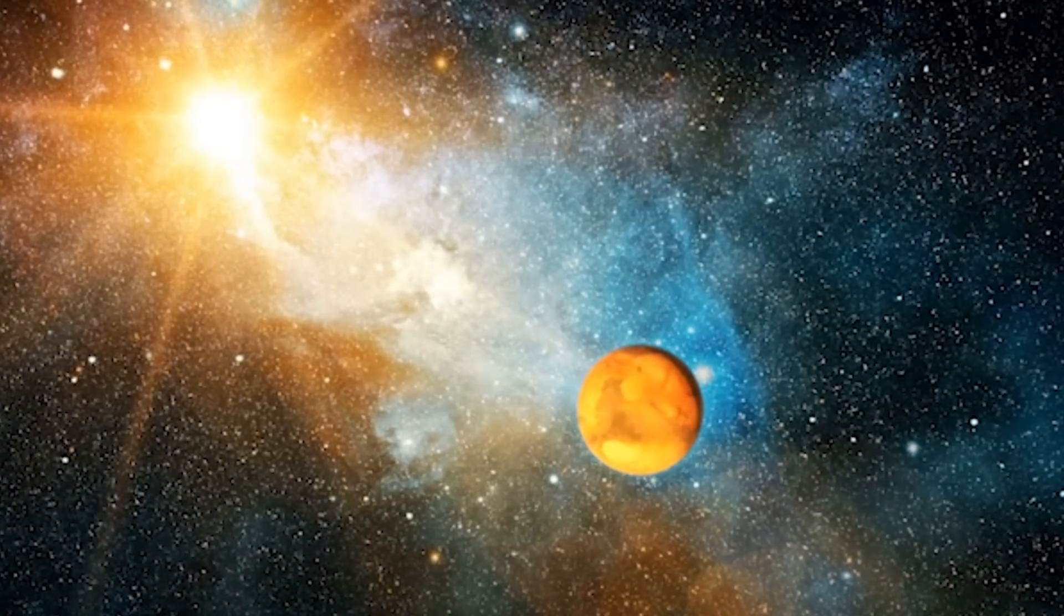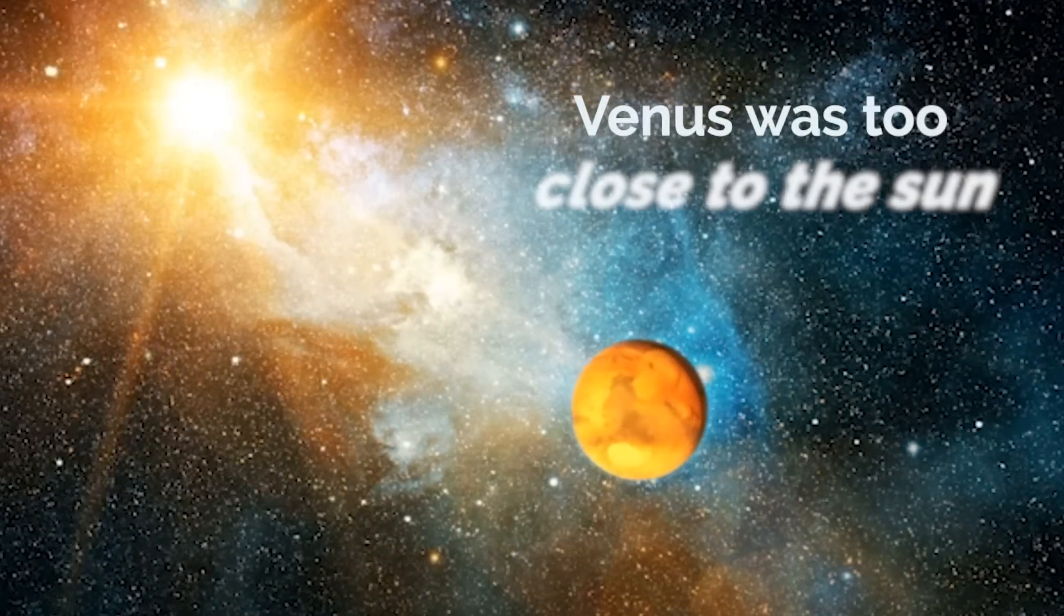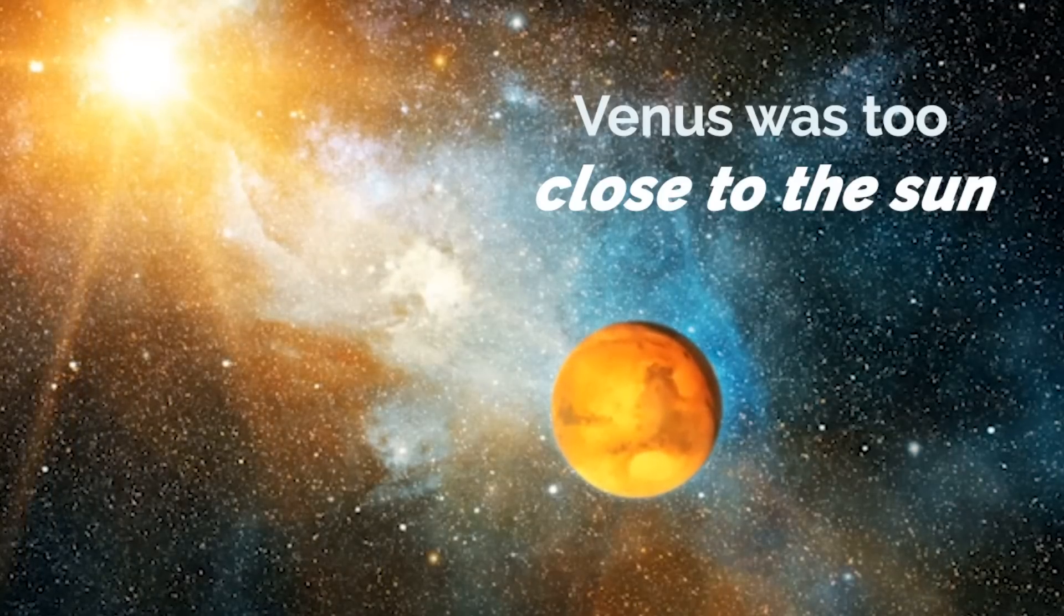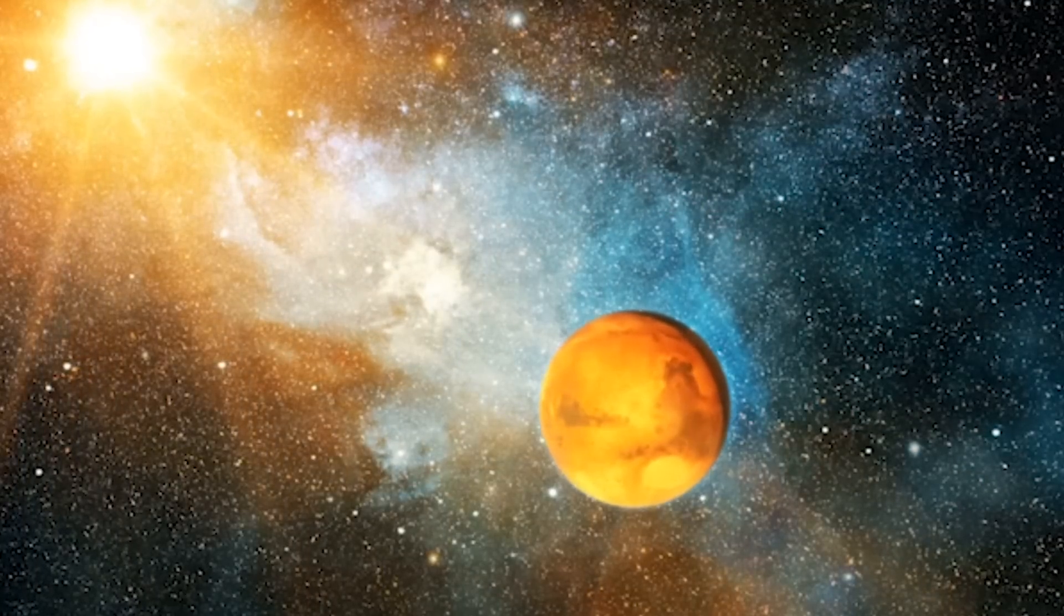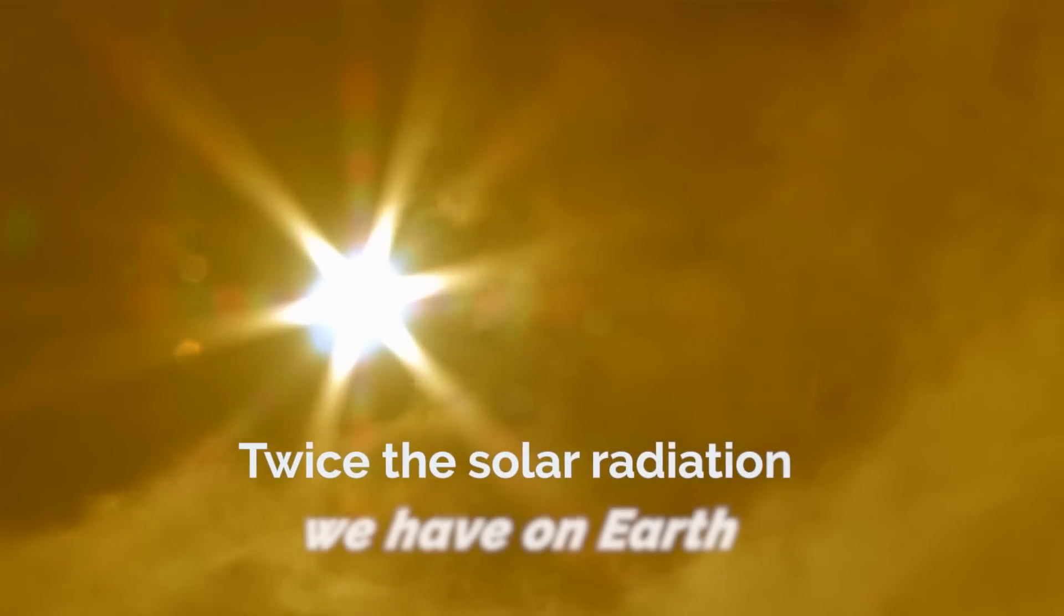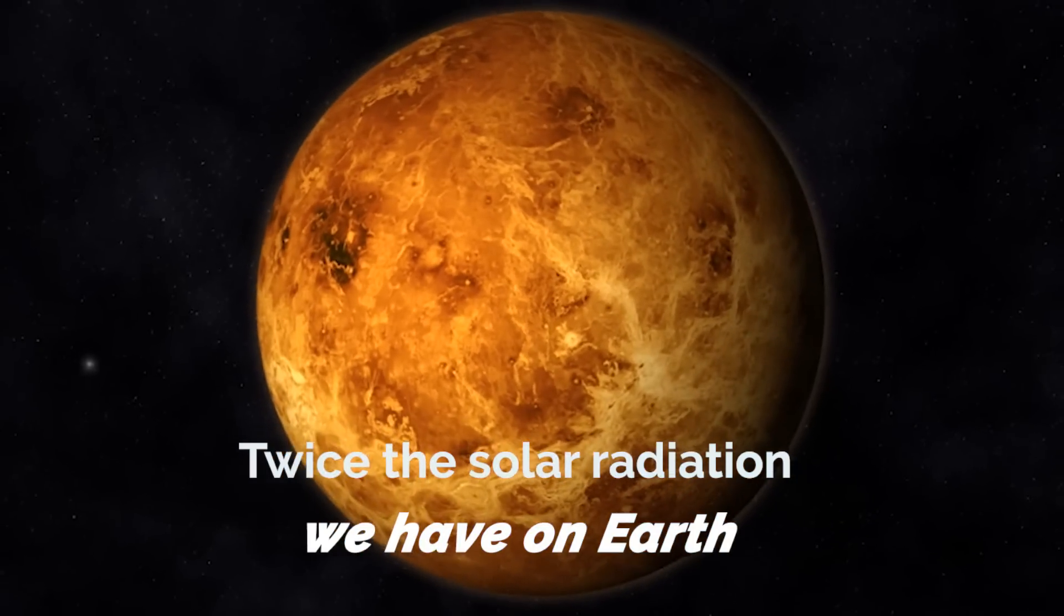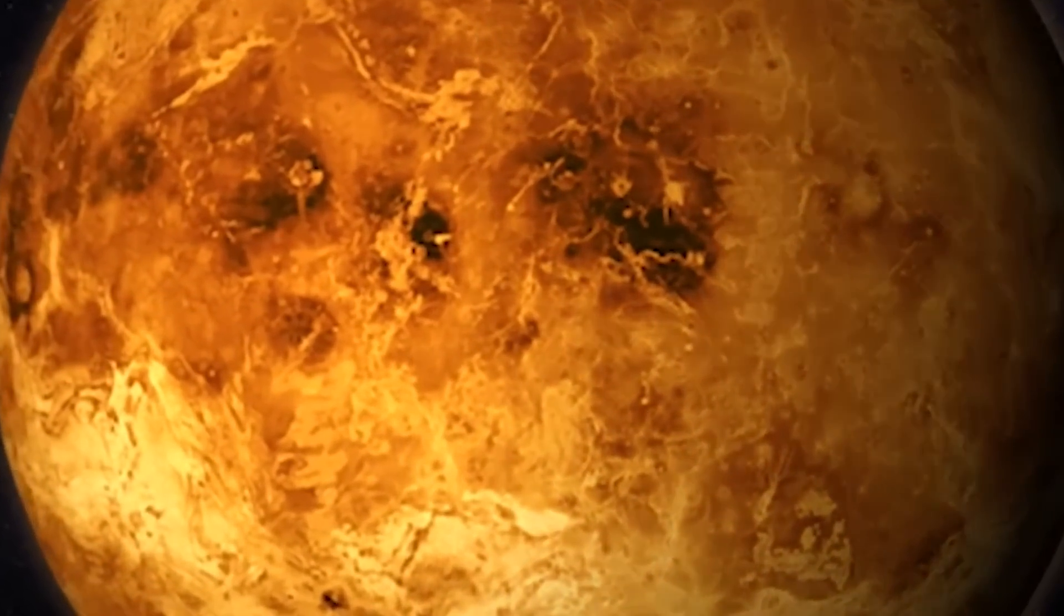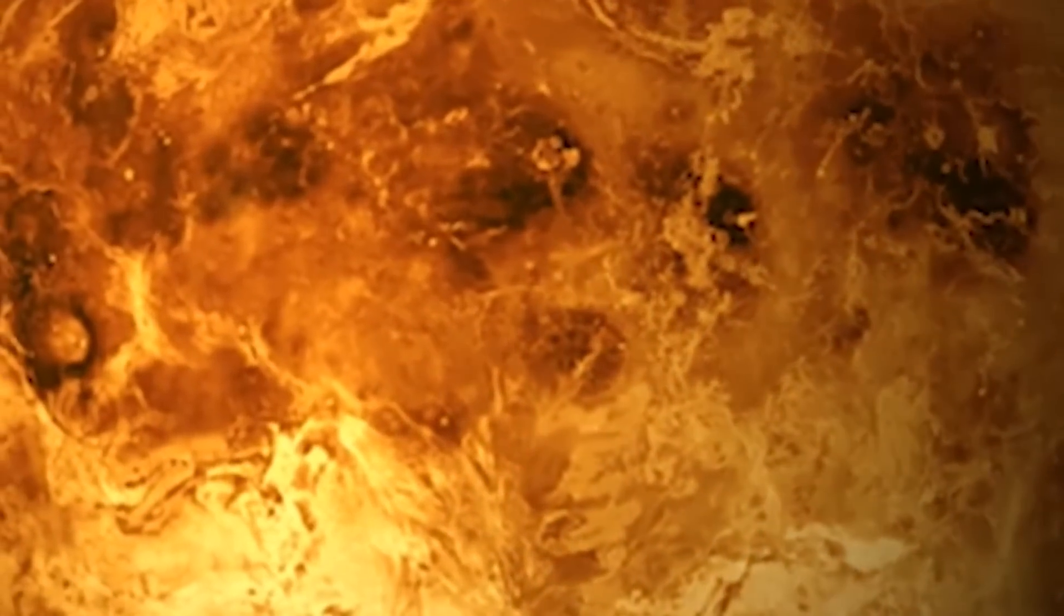Previously, researchers believed that Venus was too close to the Sun to hold liquid water on its surface, beyond the inner limit of the Sun's habitable zone. The new simulations change that belief. Venus currently has almost twice the solar radiation we have on Earth. However, in all the modeled scenarios, it was discovered that Venus could still withstand surface temperatures that could retain liquid water.